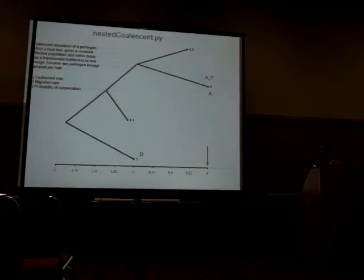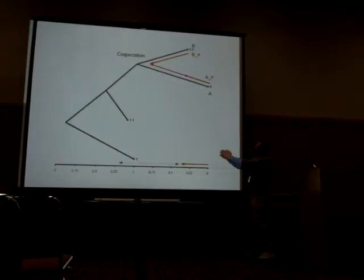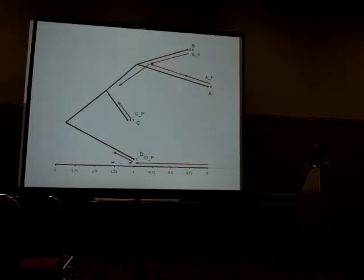So it's a coalescent back-in-time process. We start at the forest, the tips of the tree. We initialize the host and its pathogen inside, and we actually see what comes next. In this case, pathogen BP gets initialized in its host B. We draw a waiting time here. If the waiting time is actually larger than the next node appearing on the tree, that's going to be a cospeciation event. I'm showing you an example where cospeciation, host switch, and coalescent within pathogens are equiprobable. They are set all of them to one.